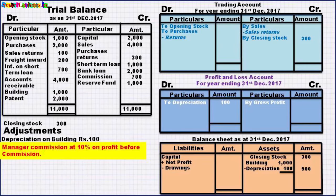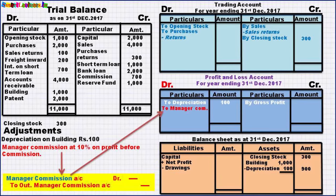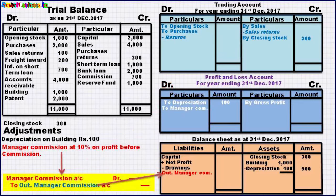For managers commission, the journal entry will be: managers commission account debit, to outstanding managers commission. Because if we calculate the commission today, it will be paid next year in 2018, so it naturally becomes an outstanding expense. Manager's commission account debit is an expense — it will go to the profit and loss account debit side. Outstanding managers commission is a liability and will go to the balance sheet liability side. At this stage we do not know the amount of manager's commission — it will be calculated later, so we leave the space for the amount.